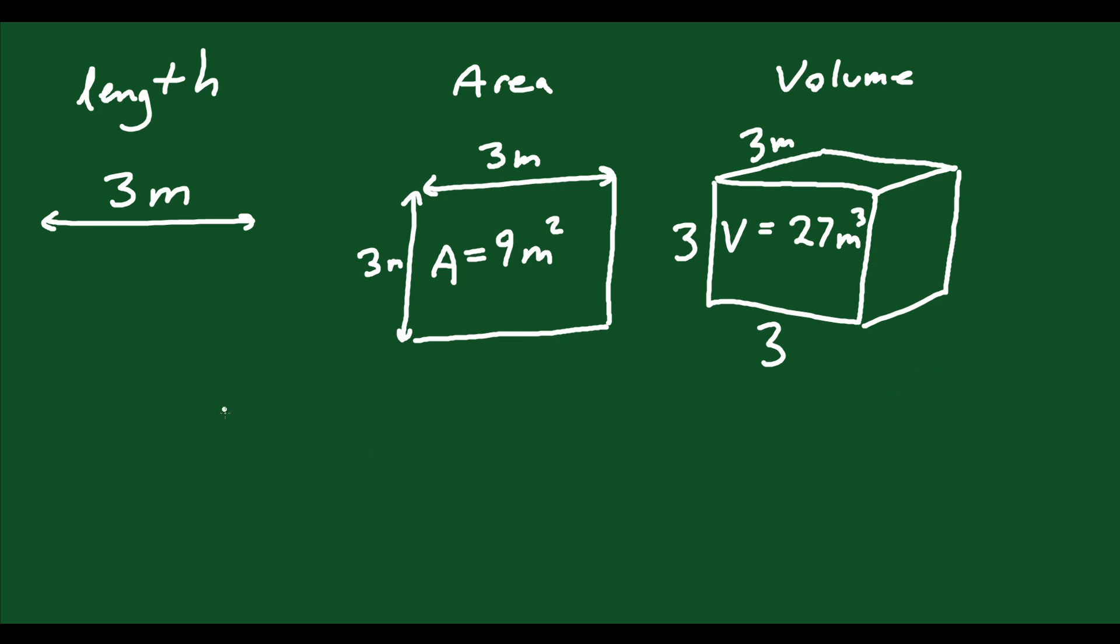So we can think about this in another way. When we talk about length we can say that's 3 to the exponent 1 because that's equal to 3. When we're talking about area you can say that's 3 squared because that's equal to 9. When you talk about volume you'd say 3 cubed. Well that's 27, you get your 27.